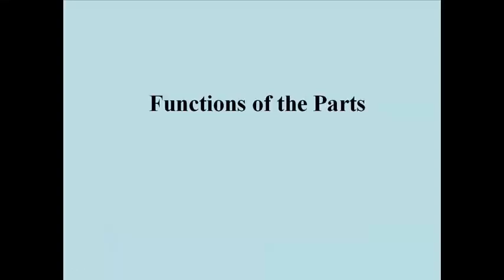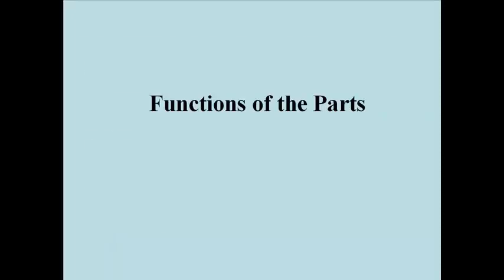Once we've separated the parts of a cell, we can ask what each of the parts does biochemically. The biochemical and molecular techniques we've developed over the last 75 to 100 years allow us to identify the particular chemical reactions that accomplish different cell functions, associate specific reactions with specific dissected cell compartments, and design probes to visualize molecules and chemical reactions inside cells and tissues using some of the microscopic techniques described.